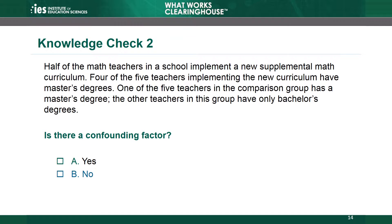The correct answer is B, no. There is no confounding factor related to teacher education because the teacher's education does not align completely with only one group. In this example, there is at least one teacher in each group with a master's degree, and there is at least one teacher in each group without a master's degree.